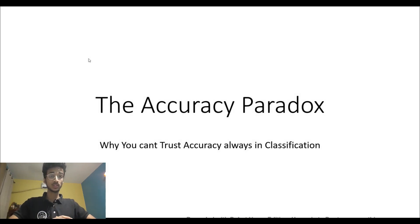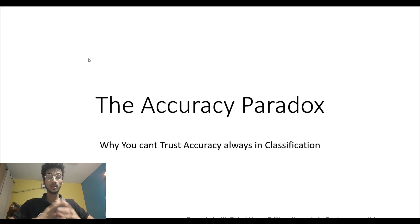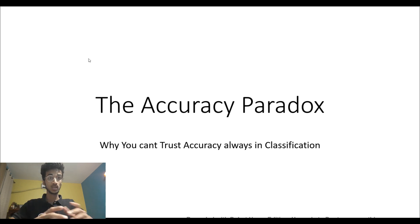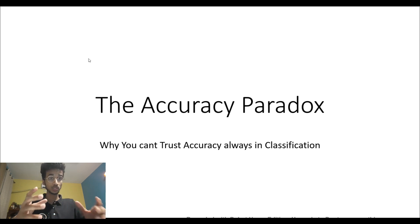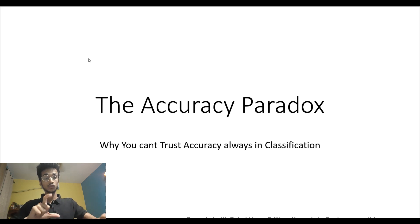Hi guys, welcome to my channel. My name is Nachiketa and in this video I'm going to talk about the accuracy paradox — basically why in classification problems you cannot always trust accuracy, and even if a model has 99% accuracy that does not mean it's good. I'm going to show you how.